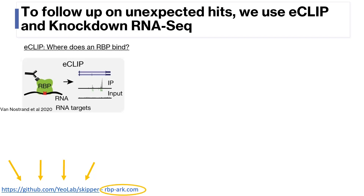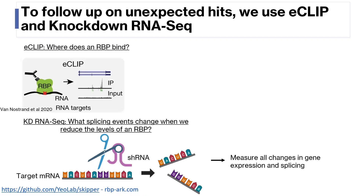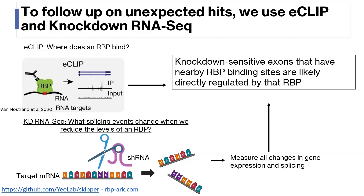The other technique we used is knockdown RNA-seq. Here we simply knock down the expression level of our unexpected hits with an shRNA, then measure transcriptome-wide changes in gene expression and splicing. We are specifically looking for knockdown-sensitive exons — exons whose inclusion level changes in response to the knockdown of our unexpected hits. The real power of these two approaches comes in their integration: we can find splicing events that change when an RBP is knocked down and have nearby RBP binding sites, implying that the change in splicing is likely directly regulated by the binding of that RBP.